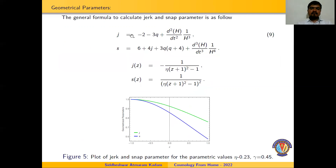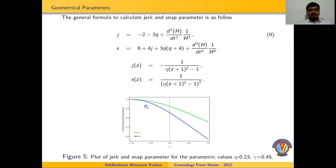We have also studied the jerk and snap parameters. Their general forms are given in equation number 9. For our scale factor, the jerk parameter is −1/(η(z+1)²) − 1 and the snap parameter is (1/(η(z+1)²) − 1)². The graphical representation in figure 5 shows that the jerk and snap parameters approach 1 at late time and show increasing behaviour from early to late time.